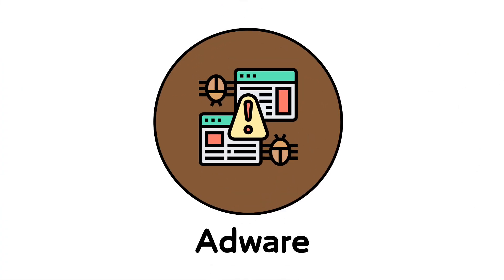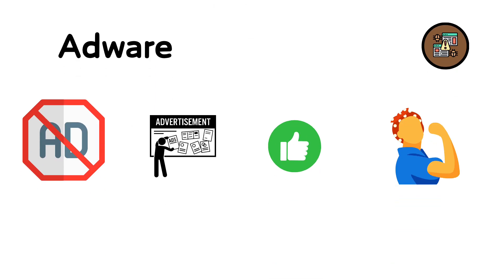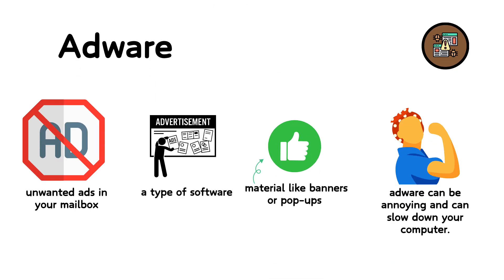25. Adware. Adware is like someone putting lots of unwanted ads in your mailbox every day. It's a type of software that automatically displays or downloads advertising material like banners or pop-ups when you use it. While not always harmful, adware can be annoying and can slow down your computer.